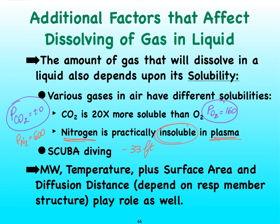So when we go further down below sea level — minus 66 feet, etc. — the partial pressure for nitrogen is going to continue increasing, and there's going to come a point where the partial pressure for nitrogen is so high that it will go into solution despite its low solubility. There comes a point where the partial pressure overcomes the poor solubility characteristic of nitrogen.